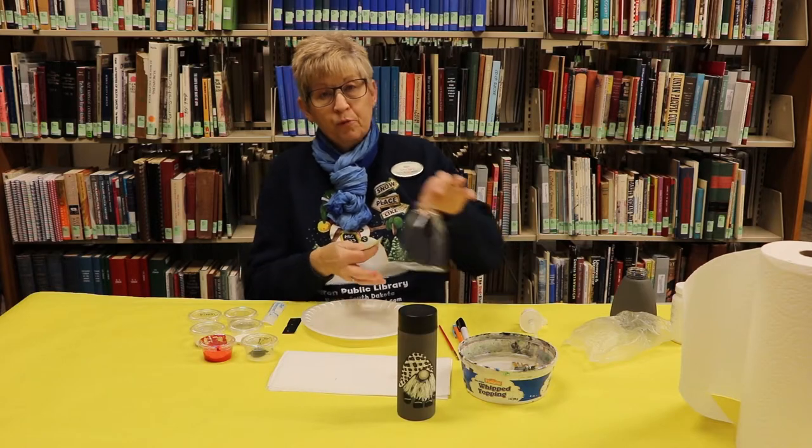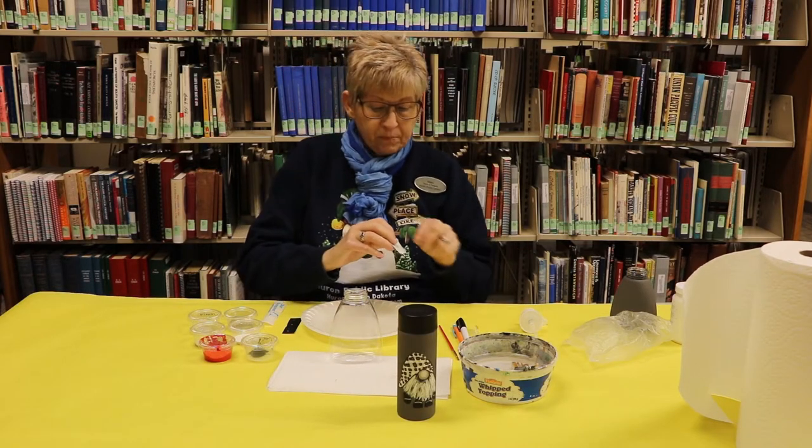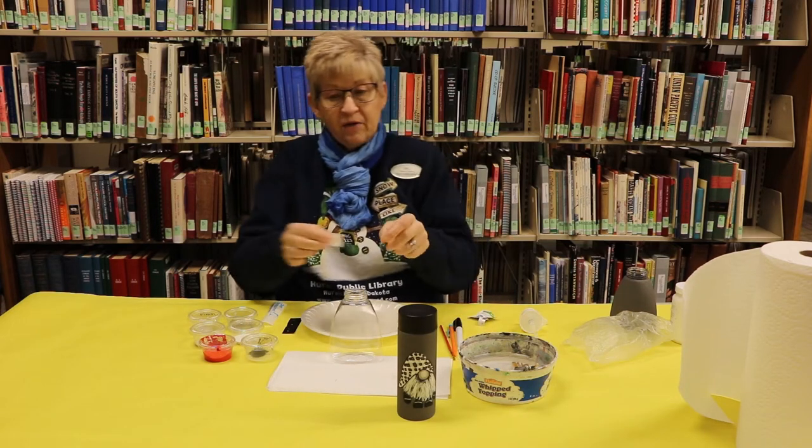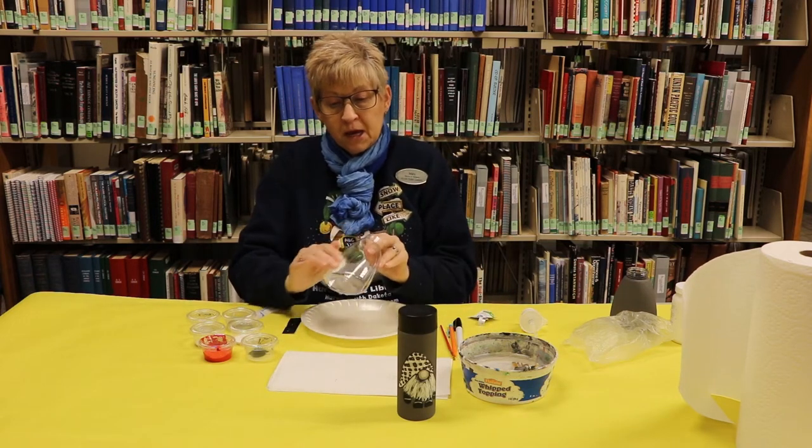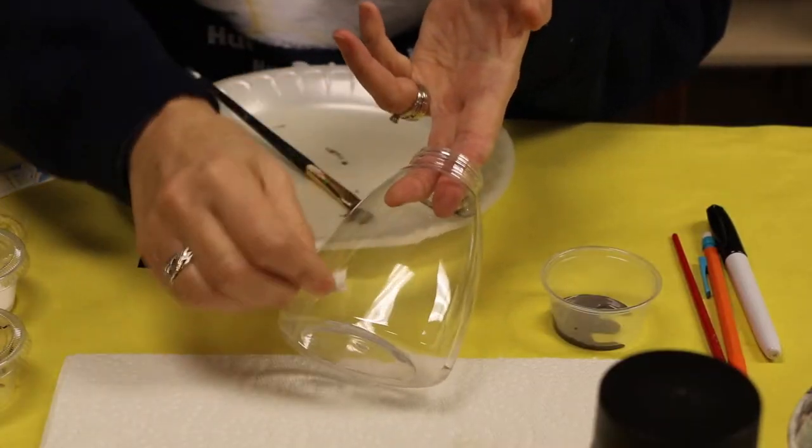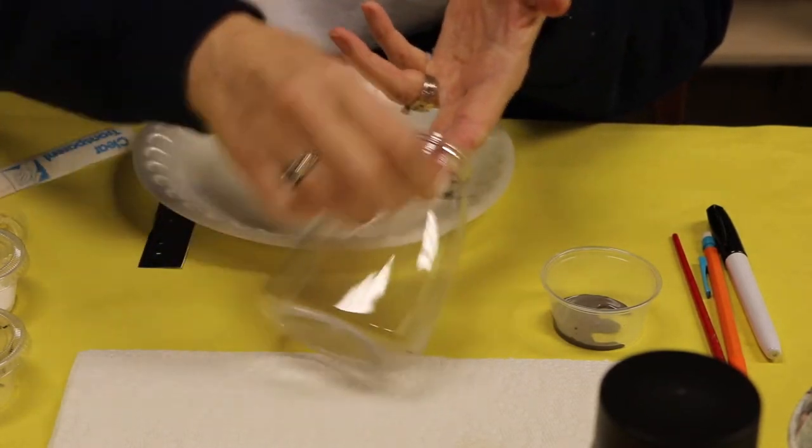First of all, you need to prepare your bottle. Take your alcohol—if you have a cotton ball with alcohol, I just have an alcohol swab. You take and just clean your jar, going over the whole jar. It prepares it and makes it clean so the paint adheres a little better.